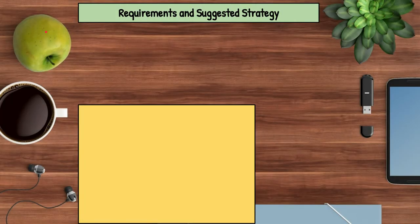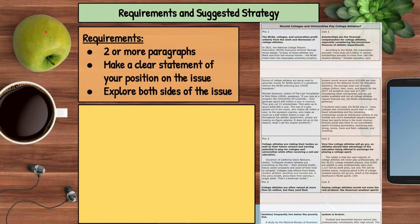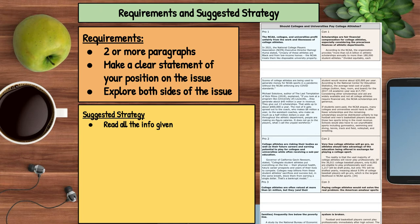Let's take a look at the requirements and the suggested strategy. The requirements: you need two or more paragraphs, you need to make a clear statement of your position on the issue — you're either for or you're against — and you need to explore both sides. The suggested strategy: first, read all of the information given. I know it's a lot, but you can use the Google Read&Write app to make it easier.